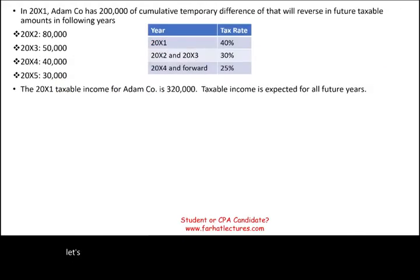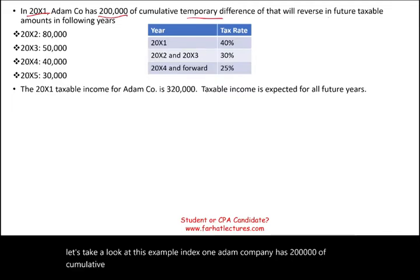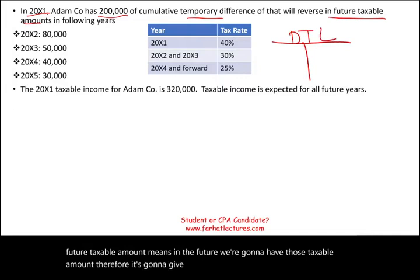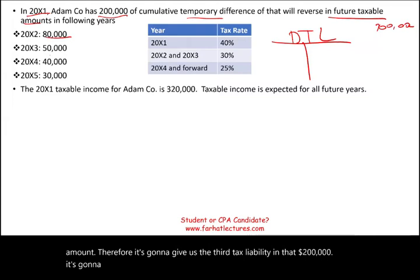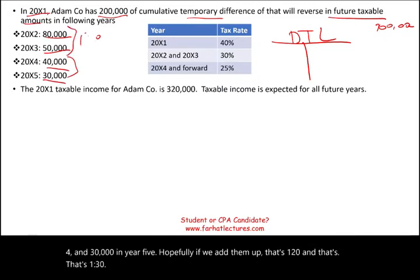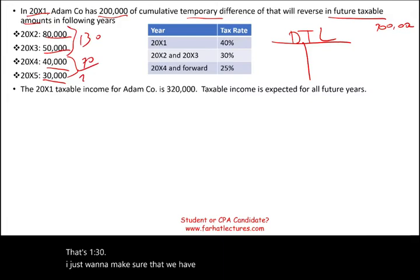Let's take a look at this example. In X1, Adam Company has $200,000 of cumulative temporary difference that will reverse as future taxable amounts — meaning in the future we're going to have those taxable amounts, giving us a deferred tax liability. Of that $200,000, $80,000 reverses in X2, $50,000 in year three, $40,000 in year four, and $30,000 in year five, totaling $200,000.